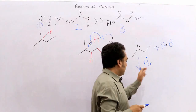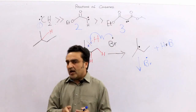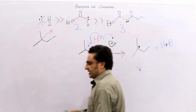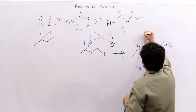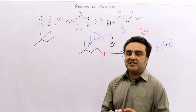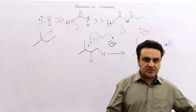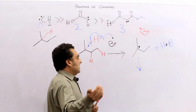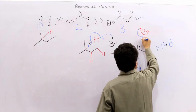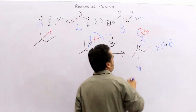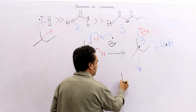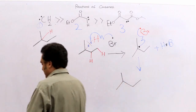Now suppose we place another bromine radical into this container. This second bromine radical will quickly combine with the carbon radical. A bond between these two is formed, and a new molecule is produced in which bromine is attached to the carbon where the radical was.